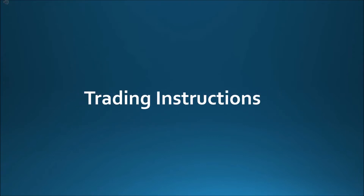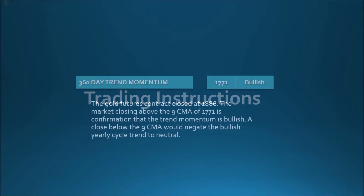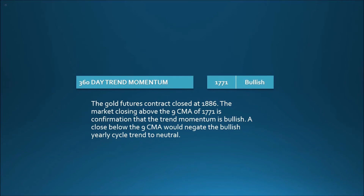Trading Instructions. 360-day trend momentum: 1771, bullish. The gold futures contract closed at 1886. The market closing above the 9CMA of 1771 is confirmation that the trend momentum is bullish. A close below the 9CMA would negate the bullish yearly cycle trend to neutral.